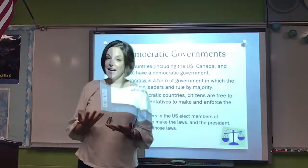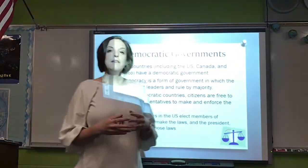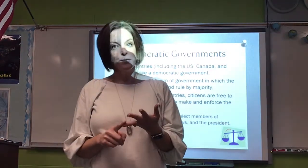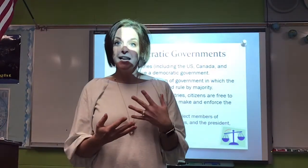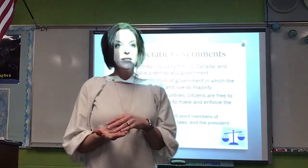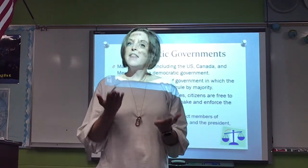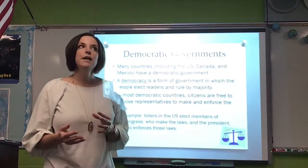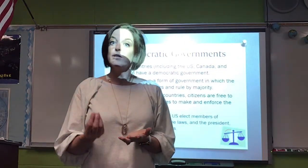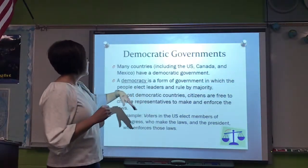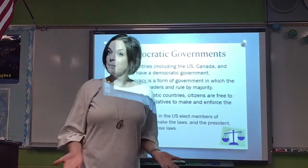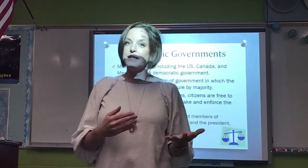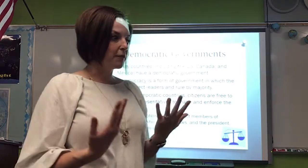We have a variety of different types of government. Even when we take a democracy, in a democratic country like the United States, so is Canada and so is Mexico. As we continue to study these countries, we're going to notice that even though we are all a form of a democracy, they're all structured a little bit differently. A democracy is a form of government in which the people are able to vote, elect a leader, and rule by majority. Pretty soon in the United States we're going to be having an election where we vote for president and many other positions.